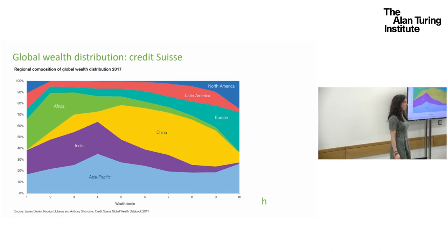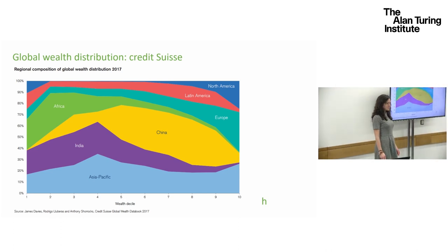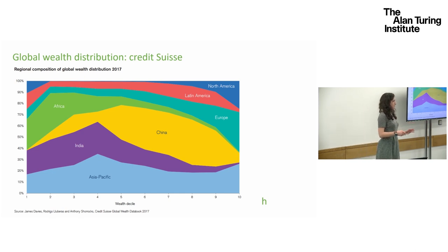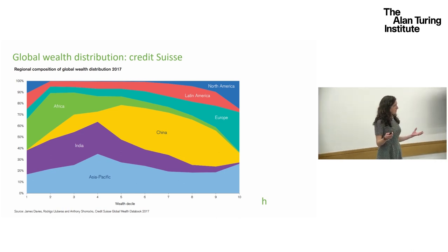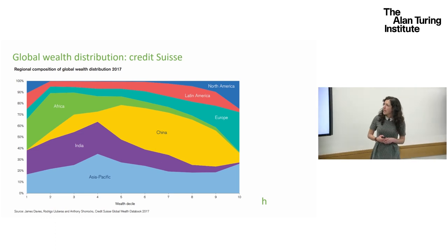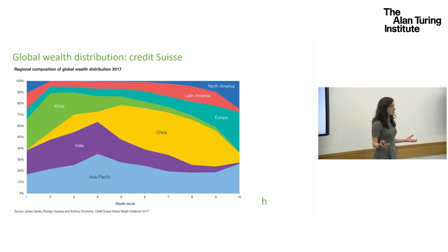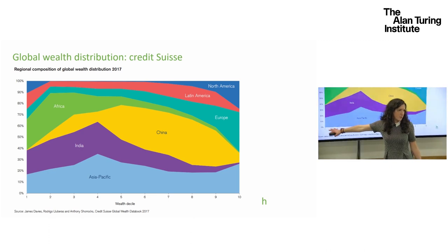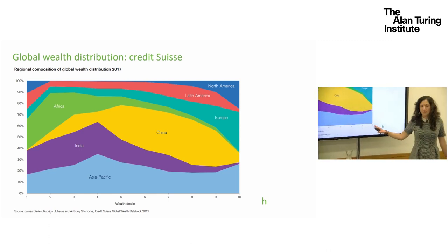Wealth is defined as financial and non-financial assets minus debt — so we're talking about personal or household wealth, not government wealth and not natural resources. Credit Suisse maps household wealth distribution around the world, building on about a decade of research by Anthony Shorrocks and his colleagues. They gather together data from national accounts on financial and non-financial assets and household survey data which maps the wealth distribution between households. Here you can see the global wealth distribution from the poorest 10% of people in the world, as measured by wealth, to the richest 10%.